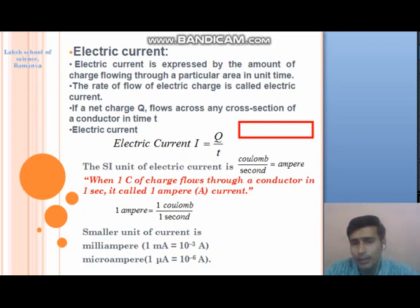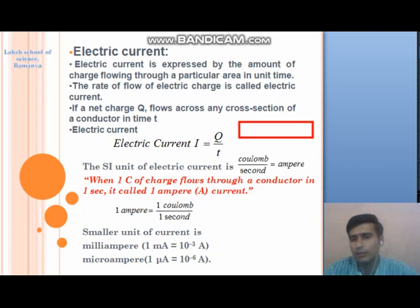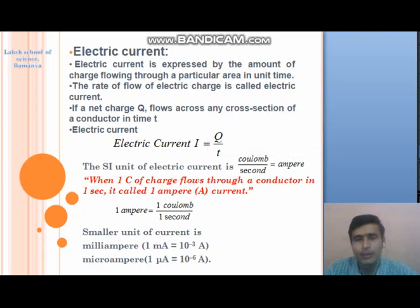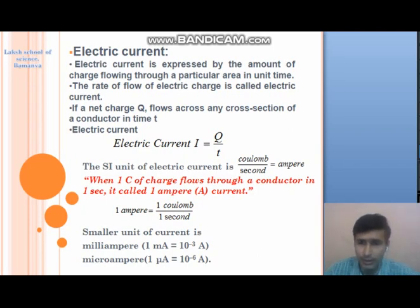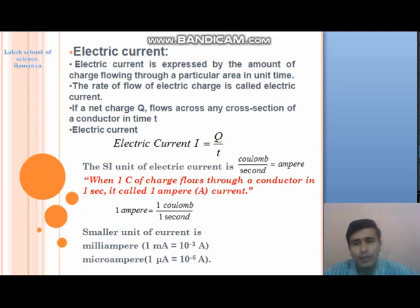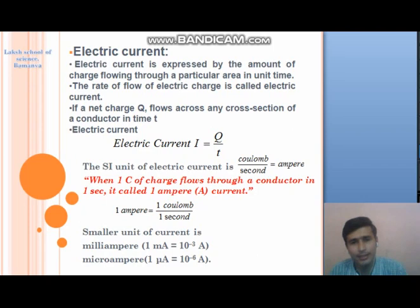The SI unit of electric current is coulomb per second, or ampere. What is 1 ampere? When 1 coulomb of charge passes through any conductor in 1 second, we say that 1 ampere current is passing through the conductor. 1 ampere = 1 coulomb / 1 second. Electric current is a fundamental physical quantity of physics.